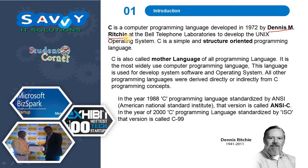All other programming languages were derived directly or indirectly from C programming concepts. In the year 1988, the C programming language was standardized by ANSI — the American National Standards Institute — and that version is called ANSI-C. In the year 2000, C programming language was standardized by ISO, and that version is called C-99.